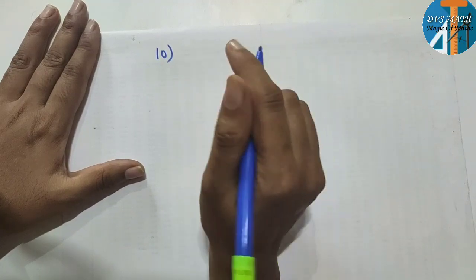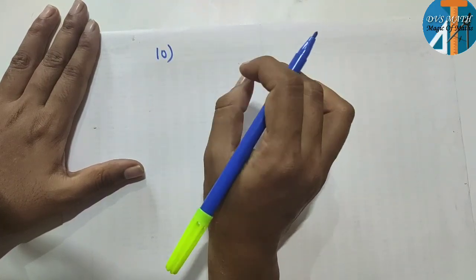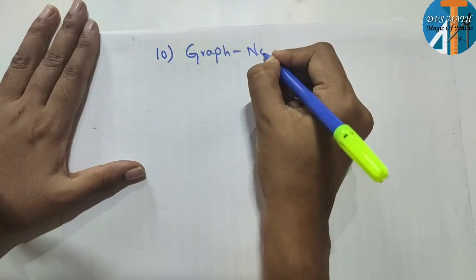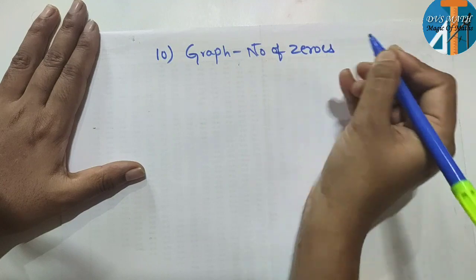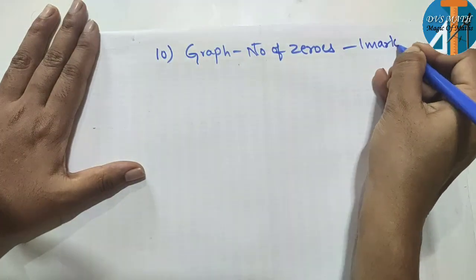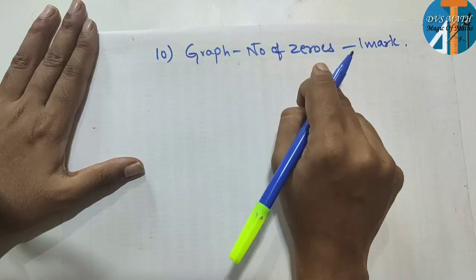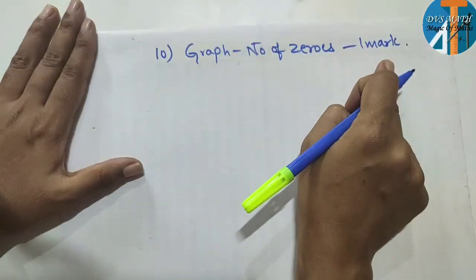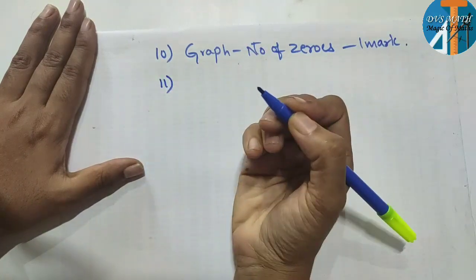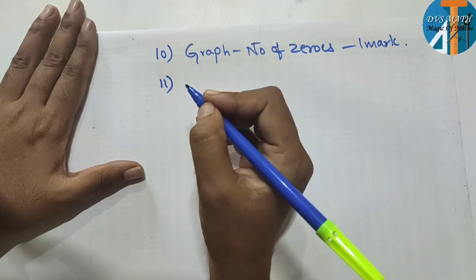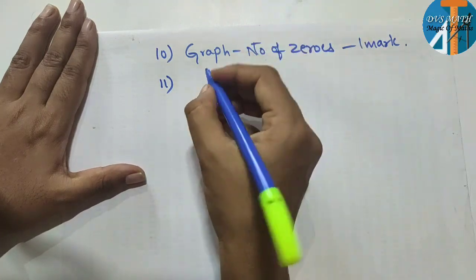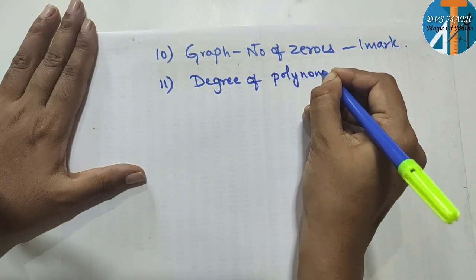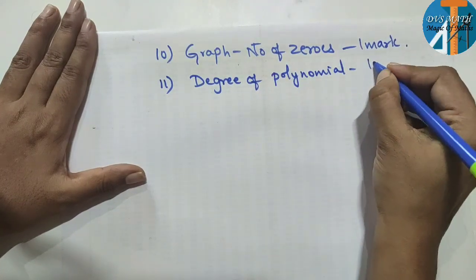Question number 10: look at the graph and find the number of zeros from the graph. Here you can easily get one mark. Also, look at a polynomial and find its degree — degree of polynomial. This is one mark, easy to solve.